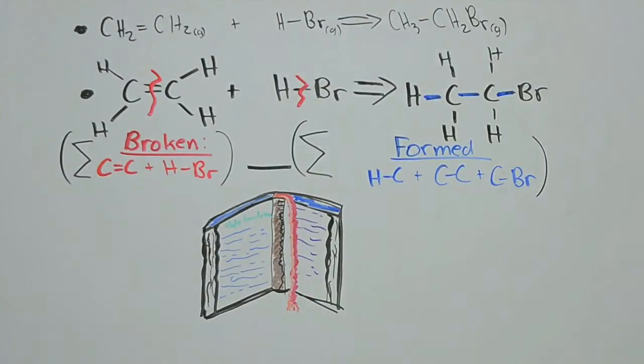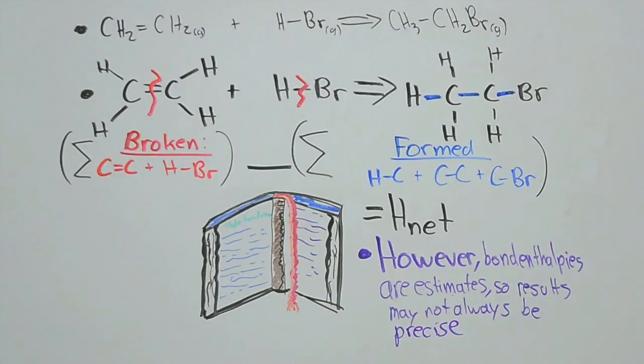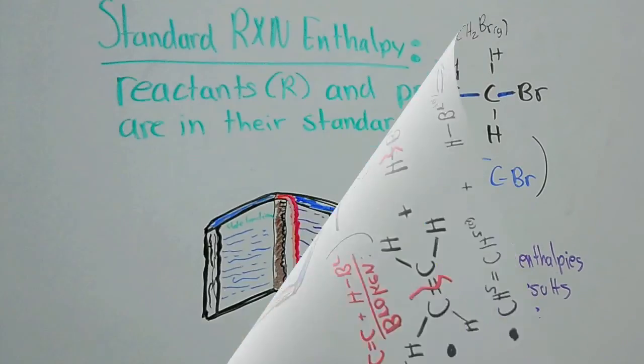Great! Now that we have identified our broken and formed bonds, we can use our bond enthalpy equation to solve for the net change in enthalpy. However, consider the fact that not all bonds are the same. Some molecules are more electronegative than others, so the strength in each bond will differ. Therefore, our given bond enthalpy values are only averages and will not always work for other molecules. Now, let's assume they do. We can have pretty precise calculations, but not always accurate.